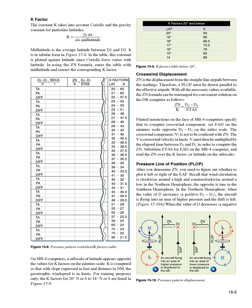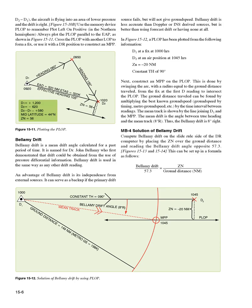Pressure line of position (PLOP): after you determine Zn, you need to figure out whether to plot it left or right of the EAP. Recall that wind circulation is clockwise around a high and counterclockwise around a low in the northern hemisphere. The opposite is true in the southern hemisphere. In the northern hemisphere, when the value of D increases (a positive D2-D1), the aircraft is flying into an area of higher pressure and the drift is left (Figure 15-10A). When the value of D decreases (a negative D2-D1), the aircraft is flying into an area of lower pressure and the drift is right (Figure 15-10B). Use the memory device PLOP to remember plot left on positive in the northern hemisphere. Always plot the PLOP parallel to the EAP, as shown in Figure 15-11. Cross the PLOP with another LOP to form a fix, or use it with a DR position to construct an MPP.